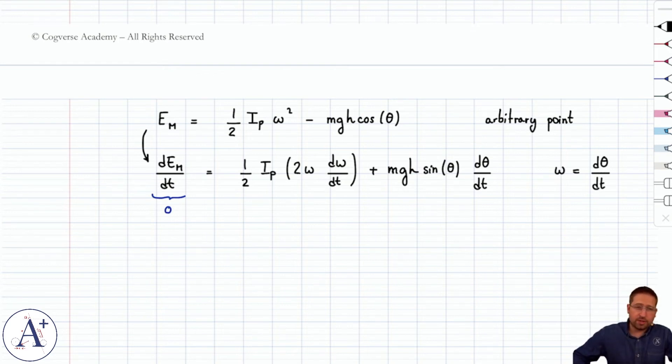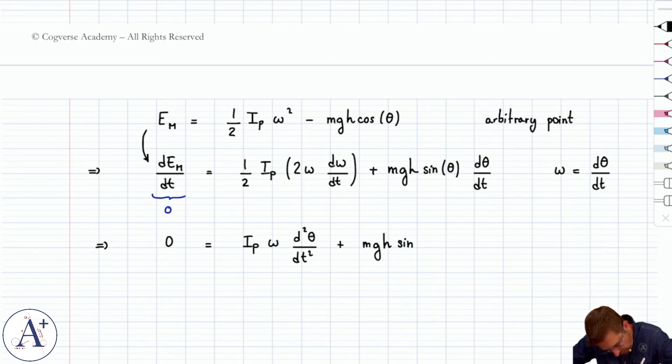Now, recall that omega is d theta dt. And recall also that omega here is the angular velocity, not the angular frequency. So, I mentioned this before is that we have a problem with notation. Let's just for now agree that any omega that we've written is angular velocity. And then we can worry about finding the angular frequency once we get the differential equation. So, this is zero and it's going to be ip omega d omega dt is, well technically it's alpha, but it's better to write it d2 theta dt squared plus mg h sine theta and this is omega.